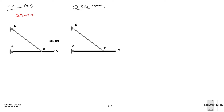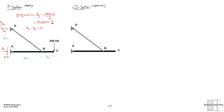Starting with the P system: summing moments about B equals zero gives AY = 200 kN × 2 m / 6 m = 93.33 kN downward. We can also find reactions DY, DX, and AX. Using sum of forces in Y equals zero, DY = 373.33 kN. Since cable DB spans 6 meters tall and 6 meters wide, DX equals AX.